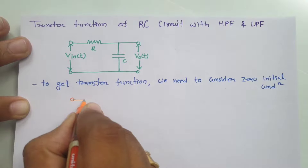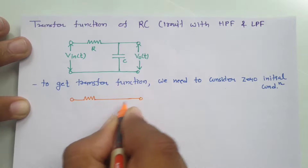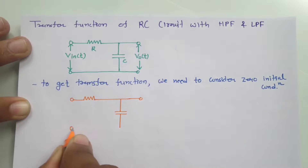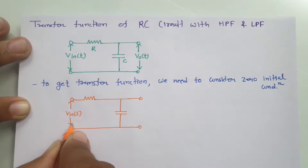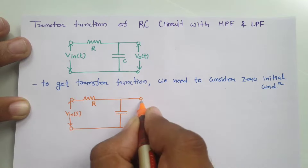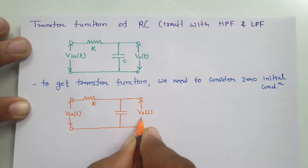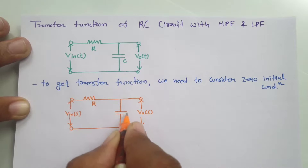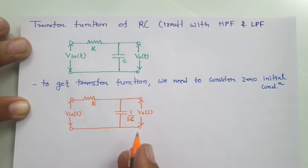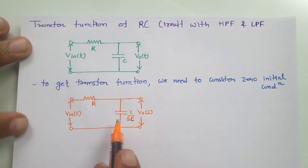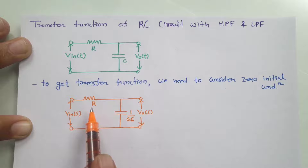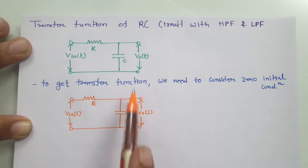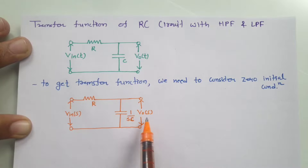Let me draw this circuit and show you how to convert it into the Laplace domain. In the Laplace domain, our input will be V_in(s), resistance will stay as R, our output will be V_out(s), and the capacitance will be 1 divided by sC. So V_in(t) becomes V_in(s), R remains R, capacitance becomes 1/sC, and V_out(t) becomes V_out(s).